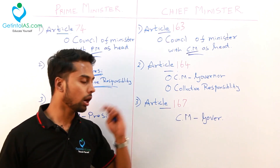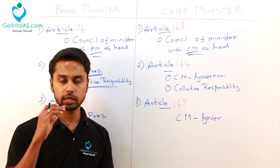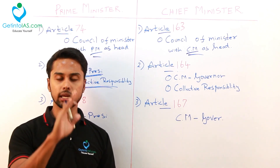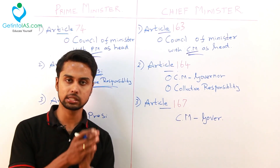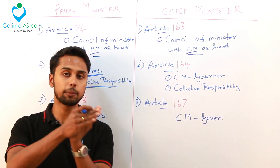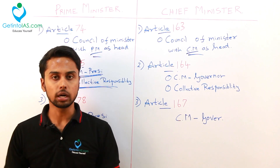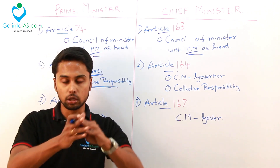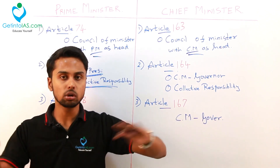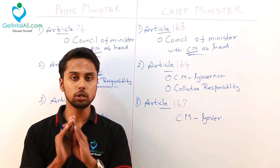If the council of ministers is coming out with an idea, it should be one single idea. For example, if a state X takes the decision that we are opposing GST, then every member of the council should oppose GST. It is not acceptable that the whole party opposes GST while some members are okay with it. There should not be a variety of ideas — the voice of the council of ministers should be unilateral. That is the main idea of collective responsibility.